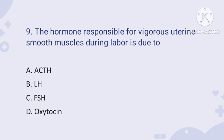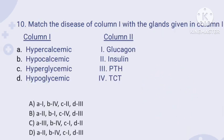Question number nine: the hormone responsible for vigorous uterine smooth muscle contraction during labor. The question asks about the hormone responsible for strong or vigorous uterine contraction at the time of childbirth. Oxytocin is responsible for the vigorous contraction of smooth muscles of the uterus at the time of childbirth. Therefore, the right answer is option D.